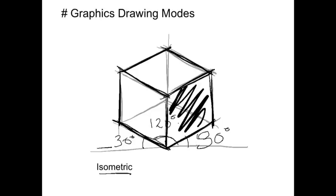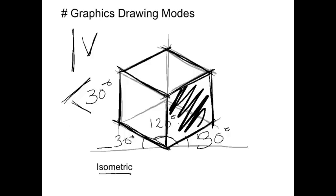One of the key features of the isometric drawing is that none of these surfaces are true shape — that is not a square, nor is that a rectangle, nor is that. None of the faces are actually true shape. The features of an isometric drawing: firstly you only have two types of lines — vertical lines, and all the other lines are either 30 degrees in one direction or 30 degrees in the other direction. So: vertical lines, 30-degree lines, and no true shapes. That's how you quickly recognize an isometric drawing.